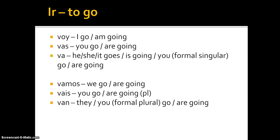Now let's look at the verb ir: voy means I go or I am going; vas means you go or are going; va means he, she, it goes or is going, or you formal singular go; vamos means we go or are going; vais means you go or are going (plural); and van means they go or are going, or you formal plural go. If the formal forms are confusing, just stick to the main ones for now.